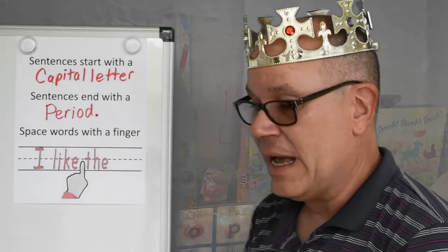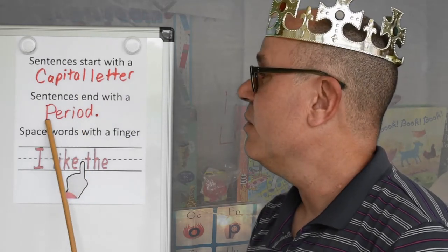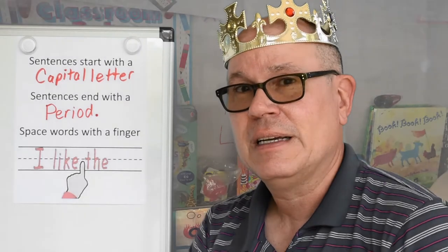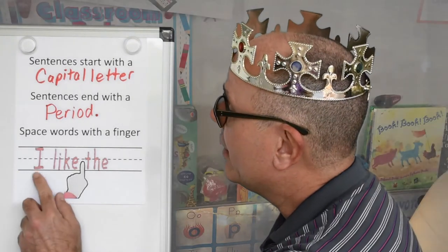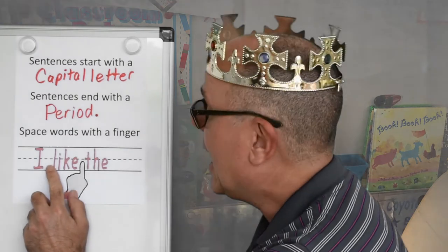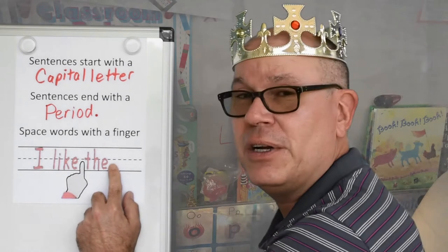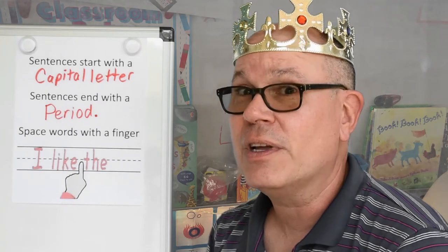So now we know that we start the sentence with a capital letter and we end it with a period. But what about the words in between? I think it's a paw space apart. A paw space, Terry? For you youngsters, it's a finger space. That's right. Let's take a look here — I, finger space, like, finger space, the — and if we can fit another word here, we would have a finger space there, or we go to the next line.